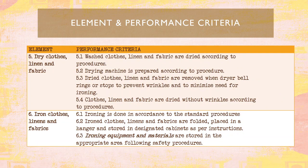Next is to dry clothes, linen, and fabric — following the proper standards. Then iron clothes, linen, and fabrics. Ironed clothes and fabrics are folded, placed on hangers, and stored in designated cabinets as per instruction. Ironing equipment and materials are stored in the appropriate area following safety procedures.